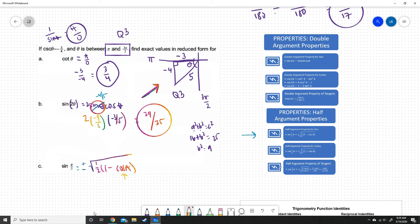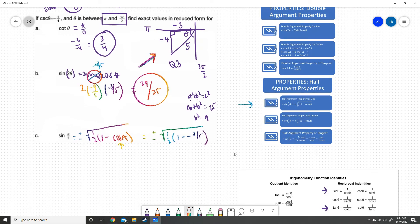Well, we know that cosine of a is negative 3 over 5. And so I'm going to replace that. So plus or minus the square root of 1 half, 1 minus negative 3 over 5. Now we have to do some algebra. Well, a negative and a negative makes a positive. And so I have plus or minus the square root of 1 half. And then we're going to have this becomes 5 over 5, so 8 fifths.